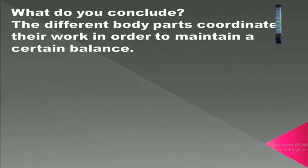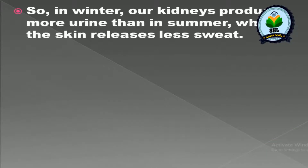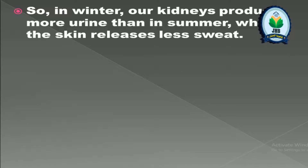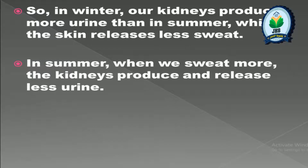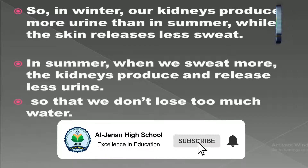What do we conclude? The different body parts coordinate their work in order to maintain a certain balance. In winter, our kidneys produce more urine than in summer, while the skin releases less sweat. In summer, when we sweat more, the kidneys produce and release less urine so that we don't lose too much water.